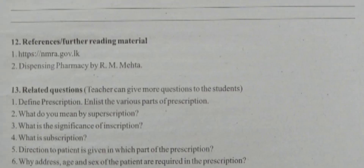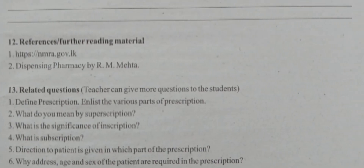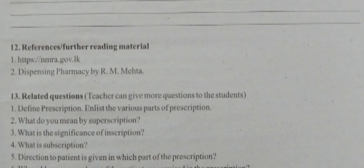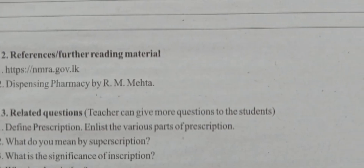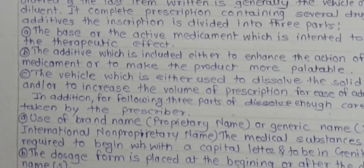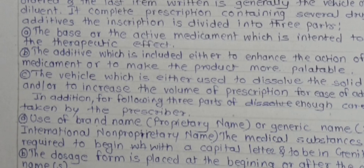Now the viva voce questions and questions for the synopsis. First question: define prescription and enlist the various parts of prescription. A prescription is a written order or direction given by the registered medical practitioner to the pharmacist for dispensing medication to the patient. The different parts are: prescriber's name, degree, address, telephone number; patient's name, address, age, date of prescription; superscription, inscription, subscription, signature of prescriber, and refill directions.